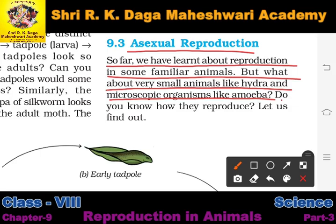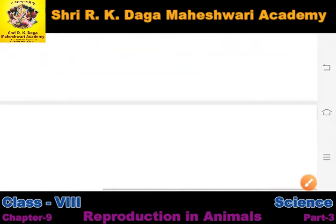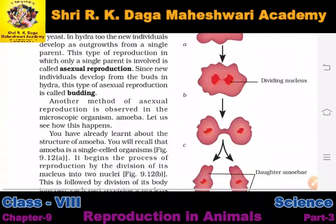We are familiar that reproduction occurs in all animals. But what about animals that are very small — microorganisms? As you studied in the previous chapter, unicellular organisms have only a single cell. So how does reproduction occur in them? For example, amoeba, hydra, and paramecium — how does reproduction happen in these microorganisms? Let us find out.